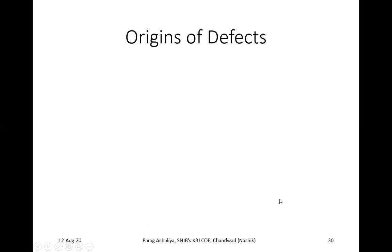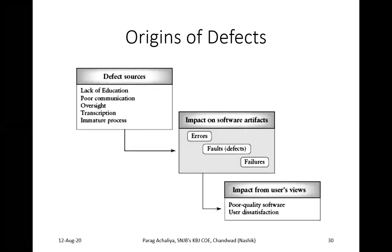Today we will start with the further part of STQA. Let's see the origins of defects — what they are and where they arise. These are the various sources of defects: lack of education, poor communication, oversight, transcription errors, and immature process. These are the possible ways from which a defect can occur and an error can be generated.